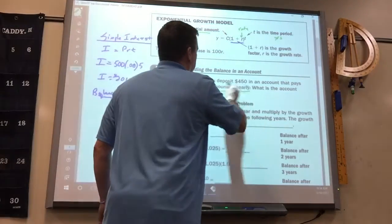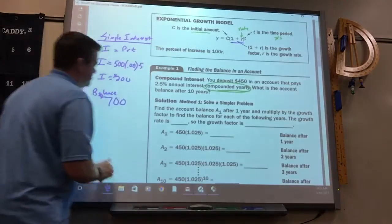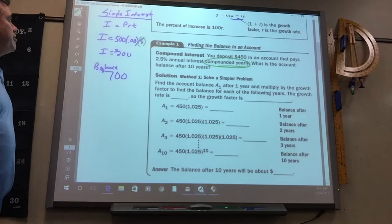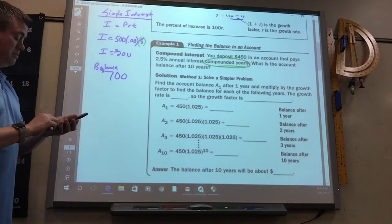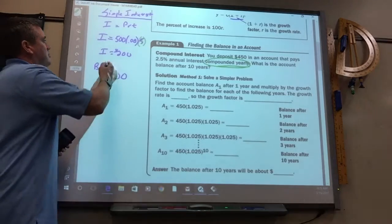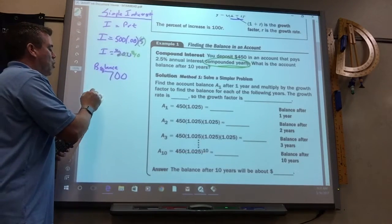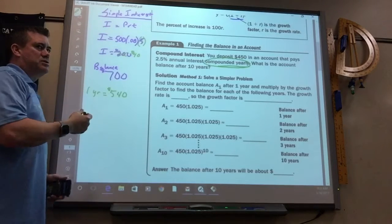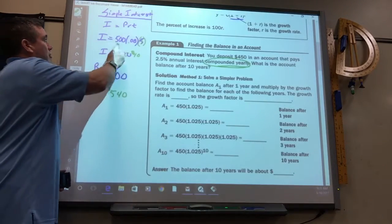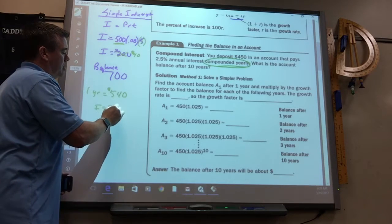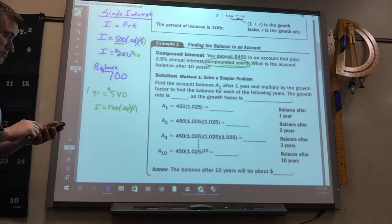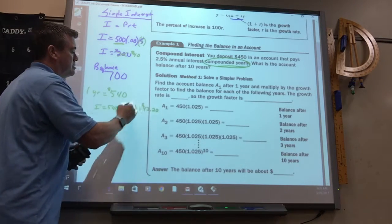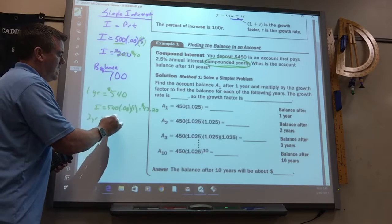Now since this is compounded yearly, the difference in this problem would be like this. Every year they got to figure out what the interest is. So we figure out what it is after one year. It'd be 500 times 0.08 times one, it's $40. So that means after one year, you have $540. Then at the end of the next year, they figure out again, but what has changed now? You have $540 in there now. So you have $540 times the interest times another year. And that'd be $43.20. So now, after two years, you have $583.20.